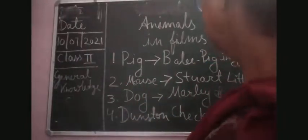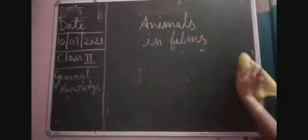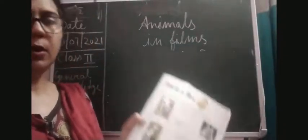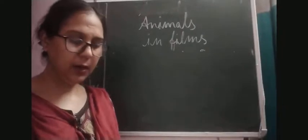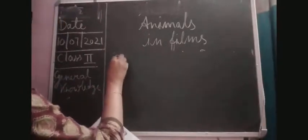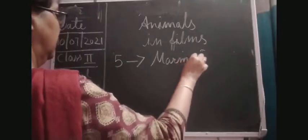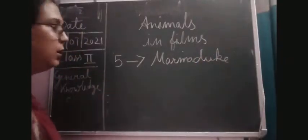Now moving to number five — you can see another dog. This dog worked in Marmaduke. So the fifth number is matched with Marmaduke. Marmaduke is a 2010 American live-action film, an adaptation of Brad Anderson's comic strip of the same name.